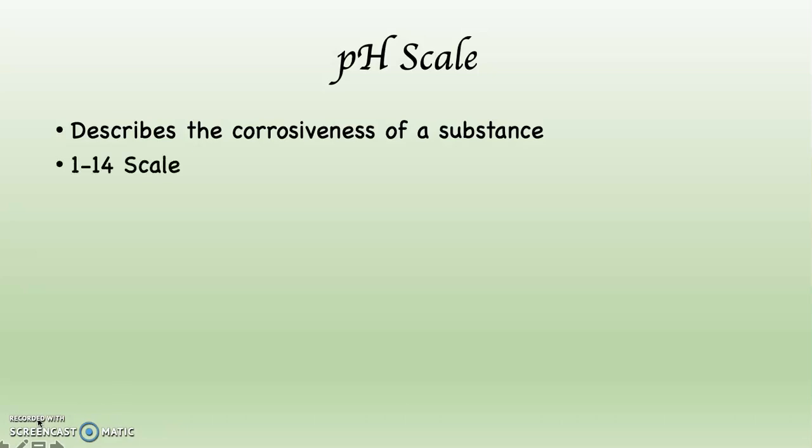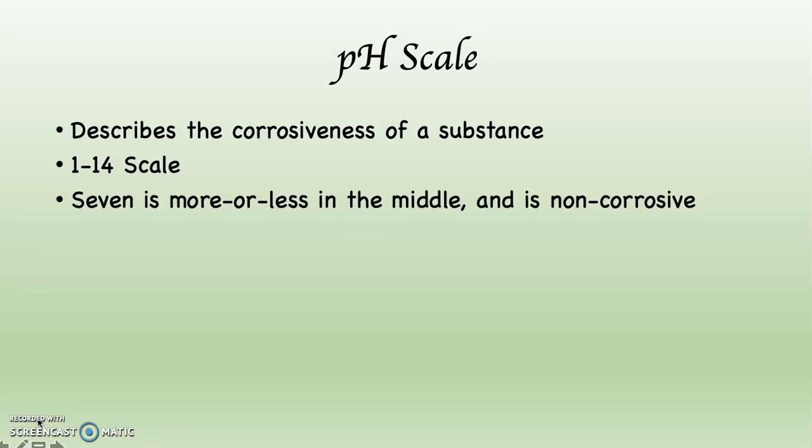It's a 1 to 14 scale, which is a little bit funky because usually we operate in 1 to 10 scales, but this is a 1 to 14 scale. 7 is more or less in the middle and is non-corrosive. 7 is distilled water — distilled water means there's nothing but H2O molecules, nothing else is dissolved in the water. If you pour distilled water over your hand from now until the end of time, it will not corrode your hand.